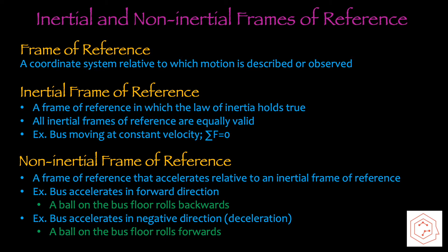So what's a frame of reference? This is something we went over briefly in the relative motion chapter, which was 1.6, but a frame of reference is a coordinate system relative to which motion is described or observed. There are two main types of frames of reference: inertial or non-inertial. An inertial frame of reference is one in which the law of inertia holds true, also known as Newton's first law. All inertial frames of reference are equally valid. An example is a bus moving at constant velocity, since the net force is equal to zero.